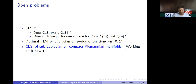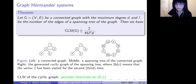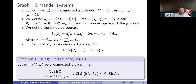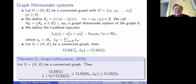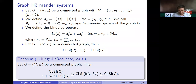Question: you have CLSI on graphs upper bounded by CLSI of the cyclic graph, and there was a graph Laplacian inequality on a previous slide — is it true for graphs? One remark: logarithmic Sobolev inequalities are used not only for concentration of measure — in Perelman's proof of the Poincaré conjecture, it was used three times. If there are no further questions, let's thank the speaker again. Thank you for having me.